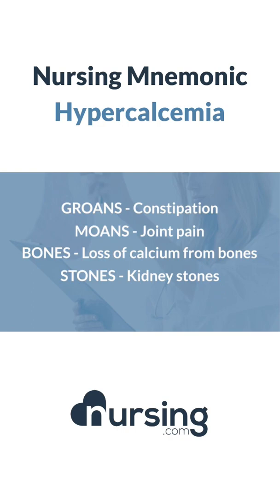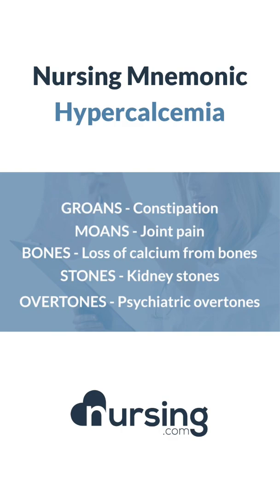Overtones is the last one. What we're talking about are the signs that you may see as the nurse — these psychiatric changes. You may see confusion or depression. Anytime you see those things with an acute onset, take a look at your patient's calcium.